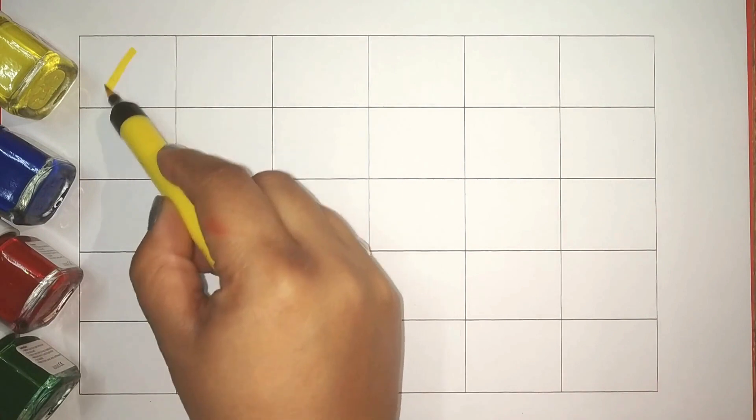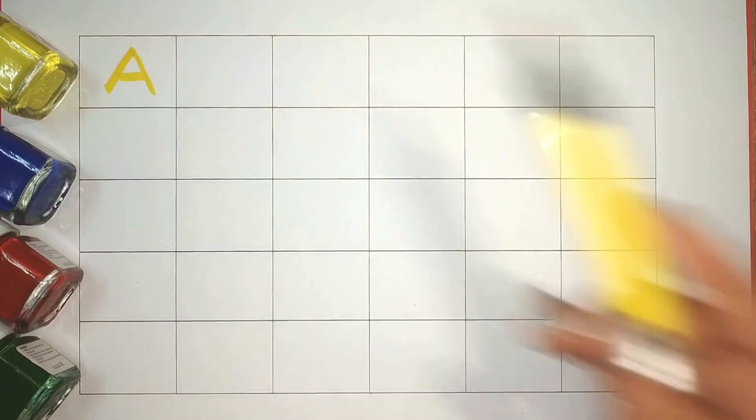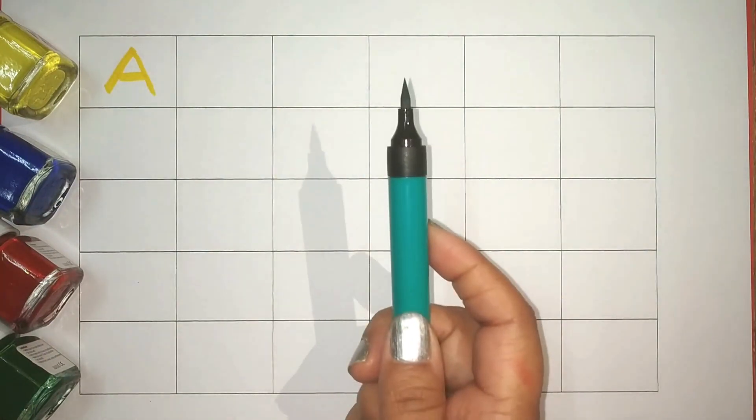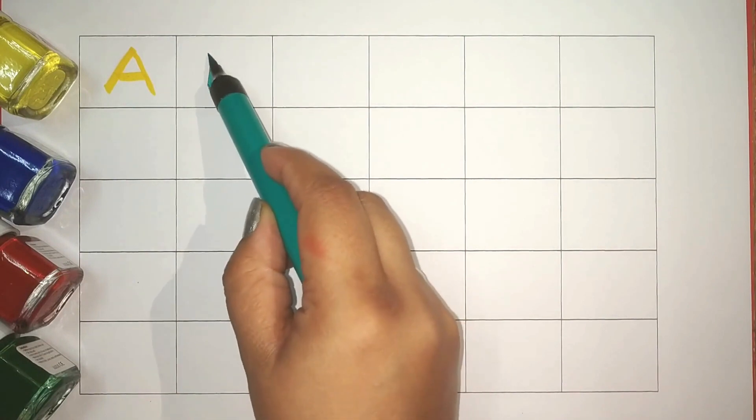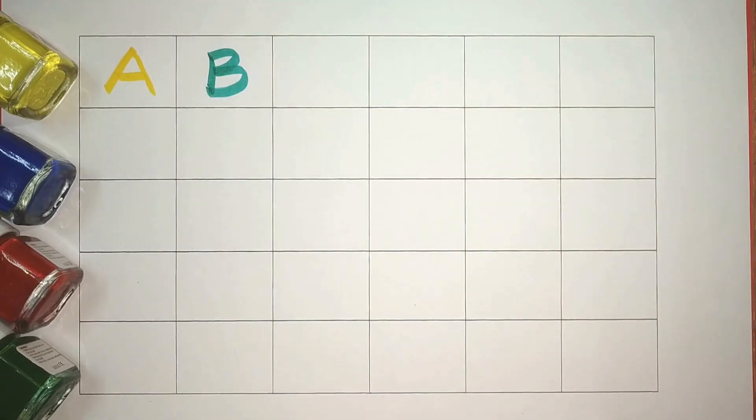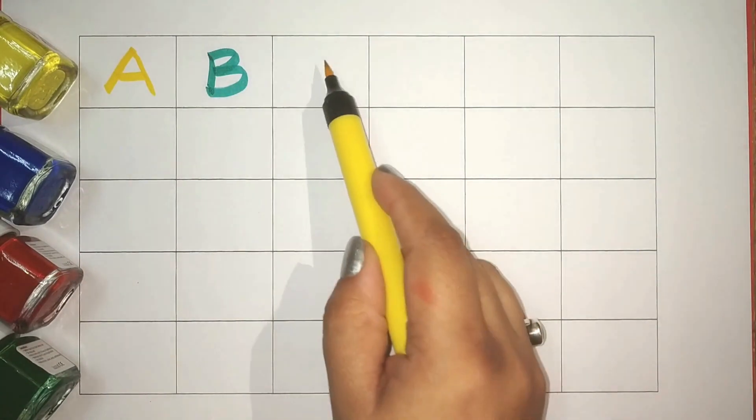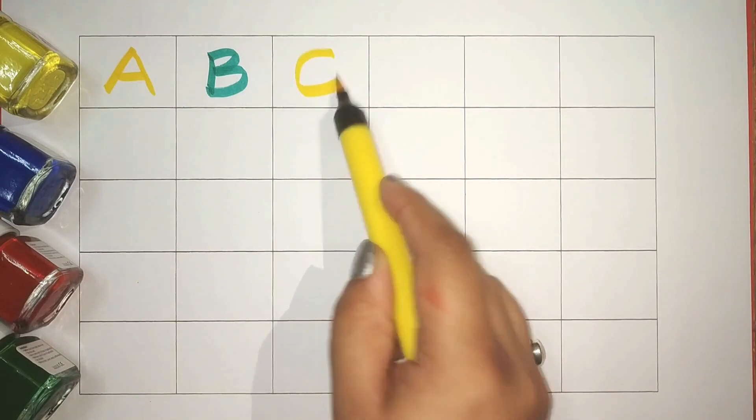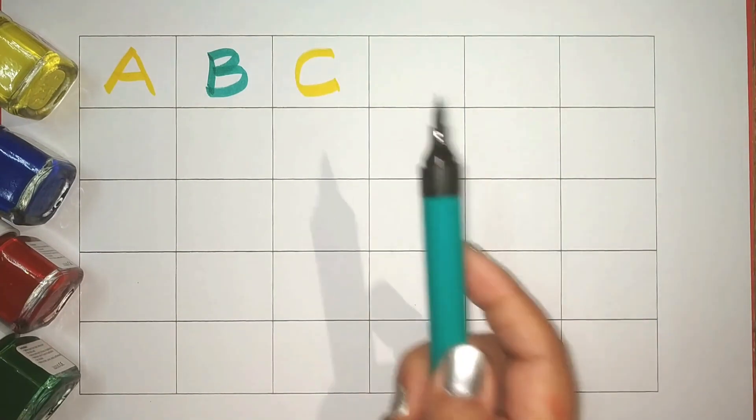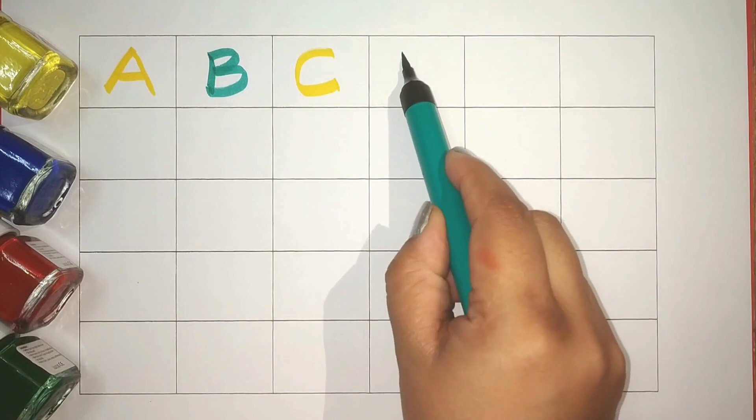Yellow, A, A for apple. Green, B, B for ball. Yellow, C, C for cat. Green, D, D for drum.